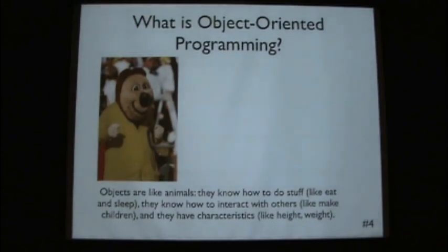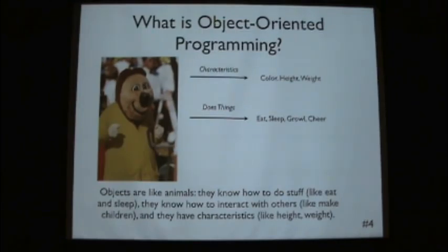So here's Oski, he's an animal. He has characteristics. He has a color, he has a height, he has a weight. He does things. He can eat, sleep, growl, cheer. Apparently he also drinks through his eyeball. And he has interactions. So he has parents, siblings, friends, etc.